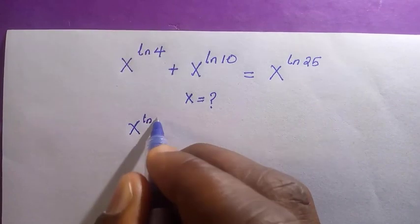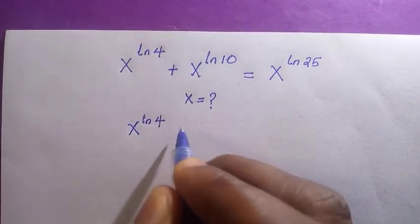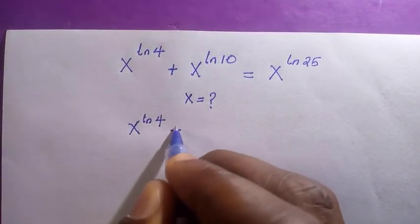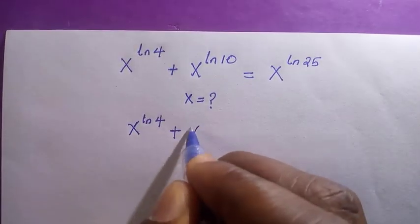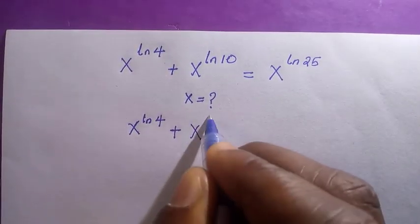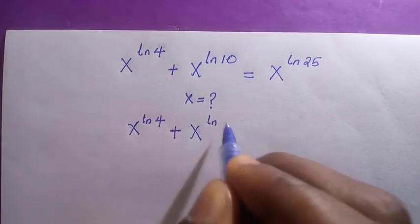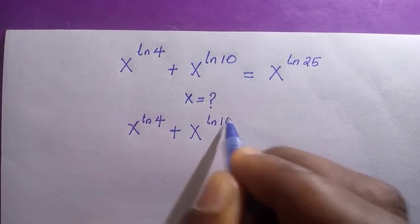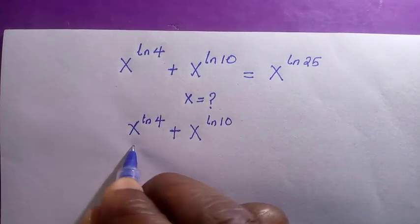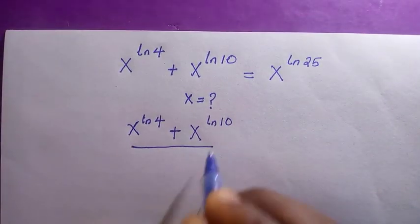We have x raised to the power of ln 4, plus x raised to the power of ln 10, equals x raised to the power of ln 25.